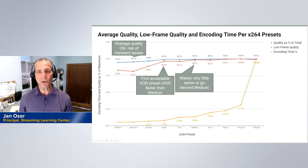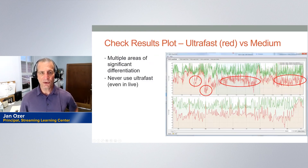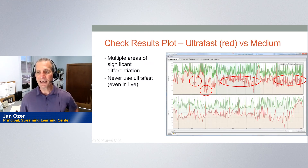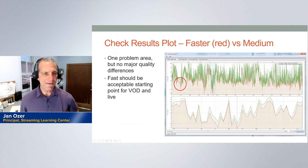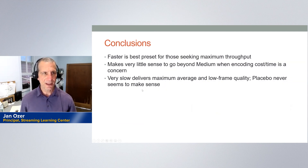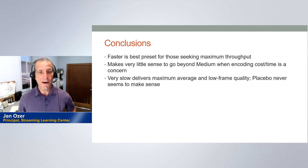After this analysis, I'd also check for visible differences in frame plots. Ultrafast versus medium shows not only a much lower overall score but many alarming areas. Fast, which I identified as the lowest acceptable quality preset, shows very few areas where it drops below medium, indicating minimal quality issues. The conclusions for x.264: faster is the best preset for maximum throughput, it makes very little sense to go beyond medium, and placebo never seems to make sense.